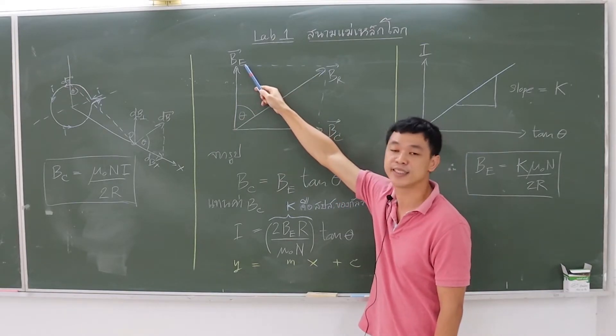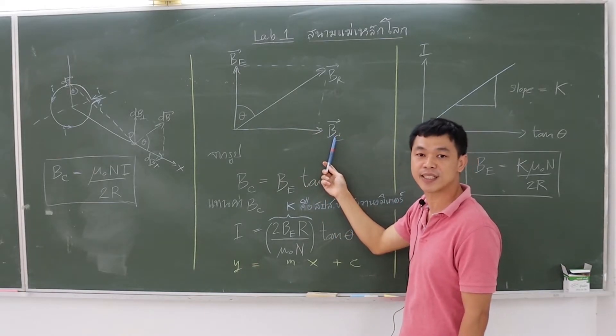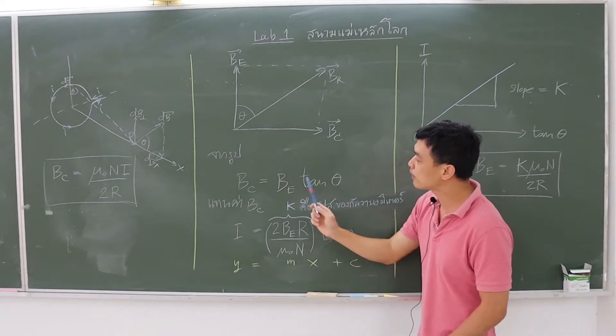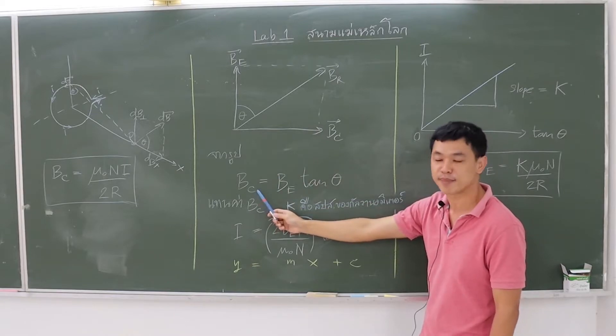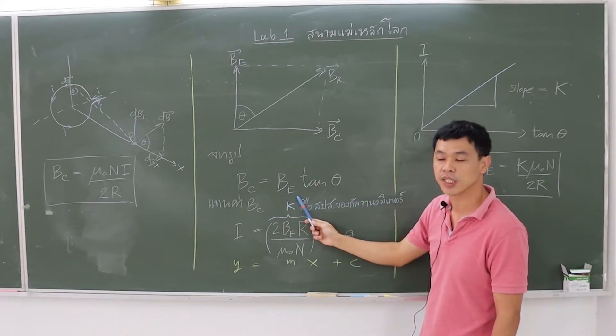Let Br as a vector of the net magnetic field, and it angles with B equal to theta. Where Br equals BC plus B, and BC equals B tan theta.